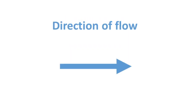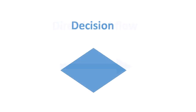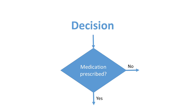An arrow shows the direction of flow from one step or decision to another. A diamond denotes decision points between two or more parts in your flowchart. The question is usually written in the diamond. More than one arrow leads out of the diamond. Each arrow shows the direction the process takes for a given answer to the question. Often the answers are yes and no, or true and false.